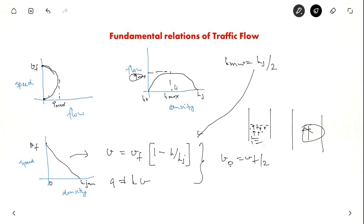At maximum flow Q max we get K max which is KJ by 2. If you substitute in this equation you will get V not which is the speed at maximum flow which is VF by 2. So from these two equations we will get Q max. Q max is equal to KV which is nothing but KJ by 2 into VF by 2.